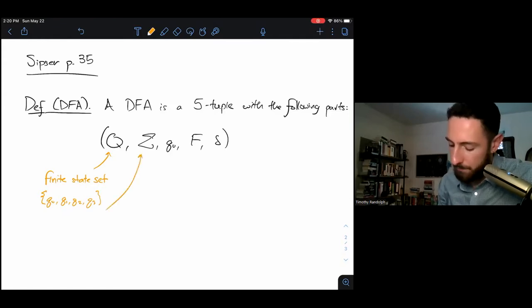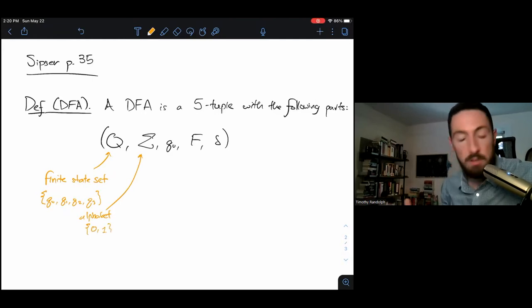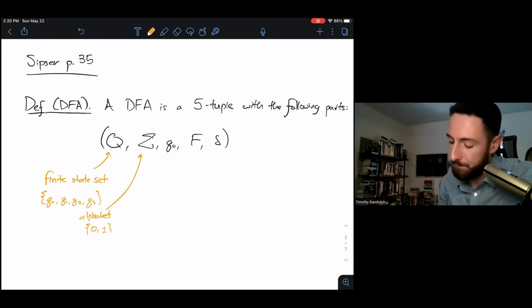Capital Sigma is our alphabet. We need to know what symbols are legal to read in, so for example that might be the binary {0,1}. Q0 is the name of some state that's in our state set, and it's the name of the start state. That tells us where to start.